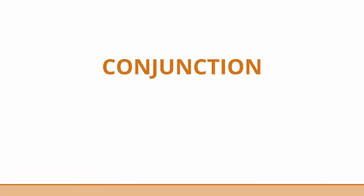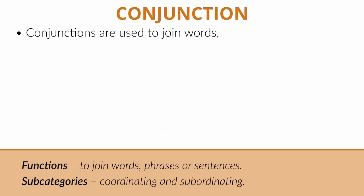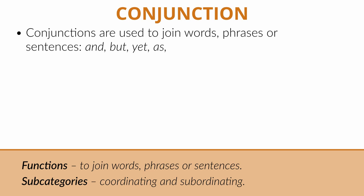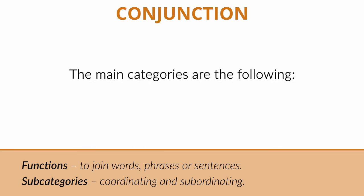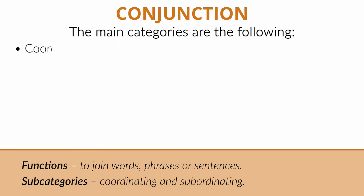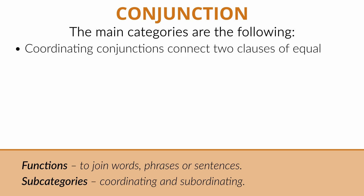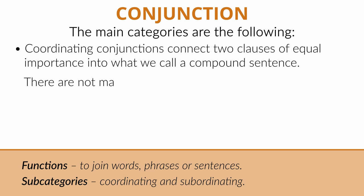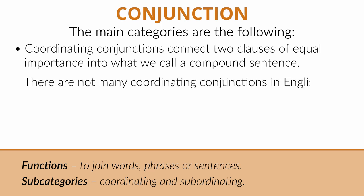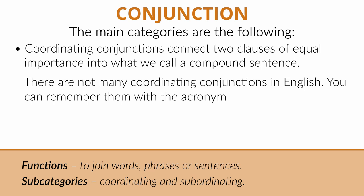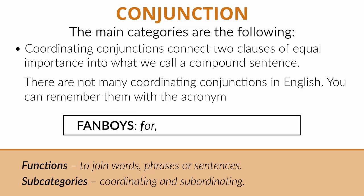Conjunction. Conjunctions are used to join words, phrases or sentences. For example: and, but, yet, as, etc. The main categories are the following. Coordinating conjunctions connect two clauses of equal importance into what we call a compound sentence. There are not many coordinating conjunctions in English — you can remember them with the acronym FANBOYS: for, and, nor, but, or, yet, so.